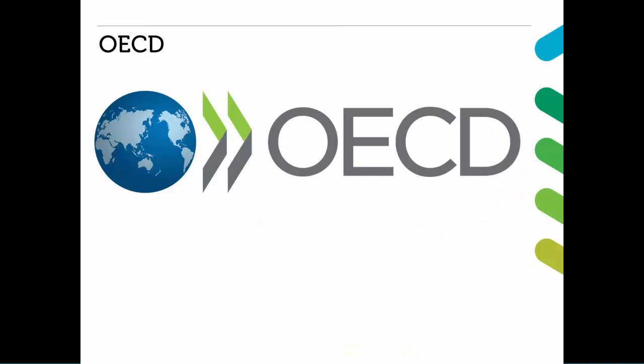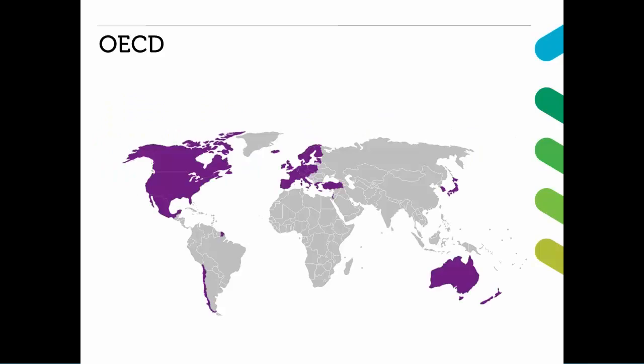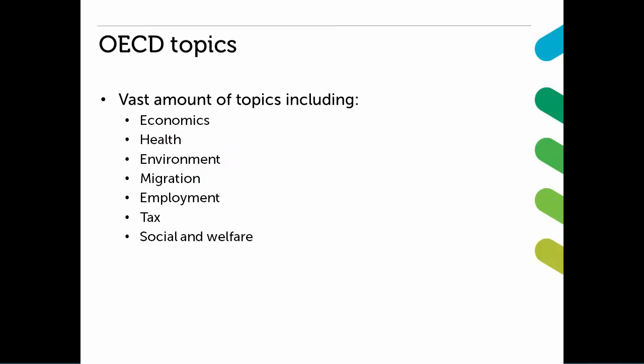The OECD is an organisation dedicated to economic development. It currently has 35 member countries, which includes many of the world's most advanced countries but also emerging countries like Mexico, Chile and Turkey. The datasets cover a vast amount of topics such as economics, health, environment, migration, employment, tax, social and welfare.